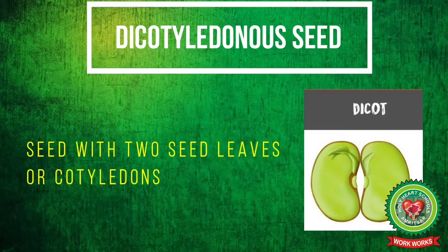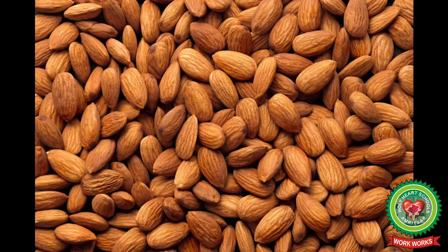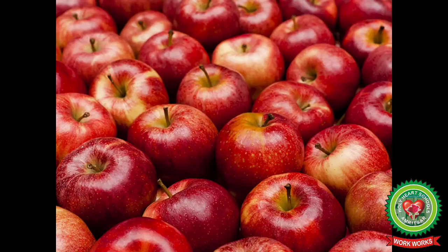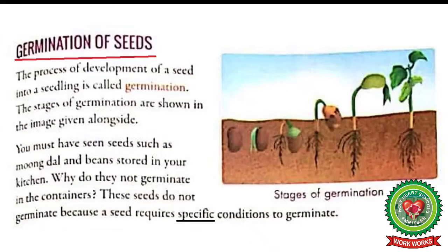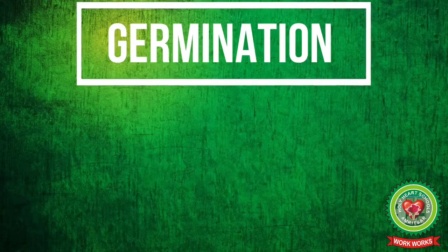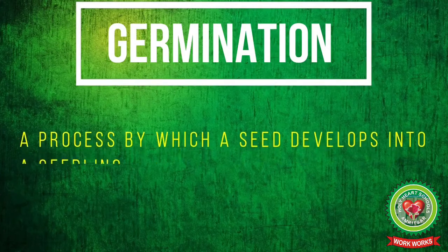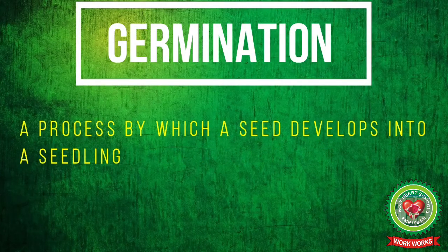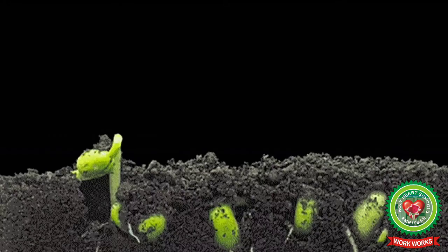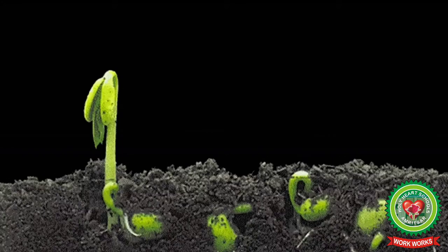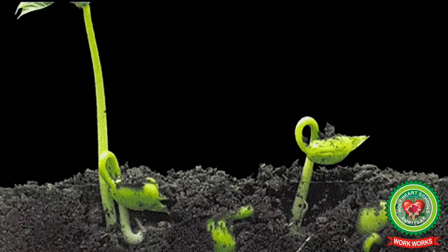Dicotyledon or dicot seeds are seeds with two seed leaves or cotyledons. Examples of dicot seeds are peas, almonds, cashews, apples, plums, etc. Now the next topic is germination of seeds. The process by which a seed develops into a seedling is called germination.